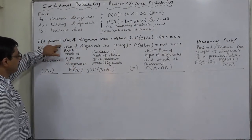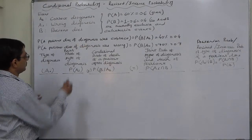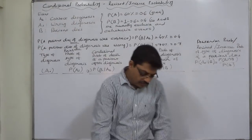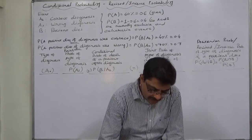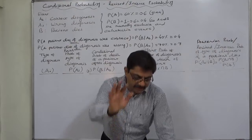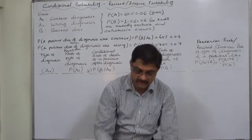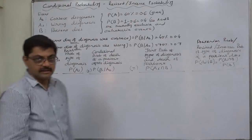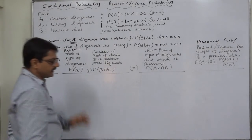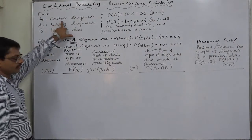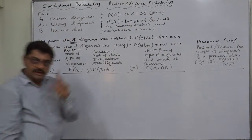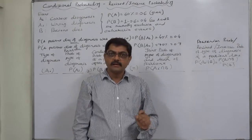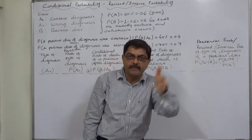The main question is: a patient of the doctor died — what is the probability that his disease was correctly diagnosed? That is, the probability of correct diagnosis given the patient died. Ultimately, as the final answer of the whole problem, we need to calculate the probability of correct diagnosis given a patient dies.